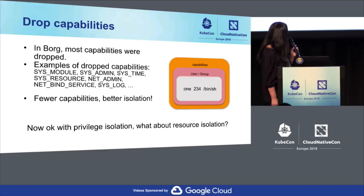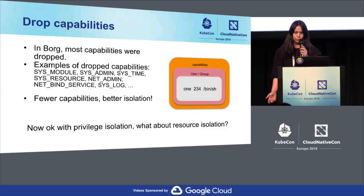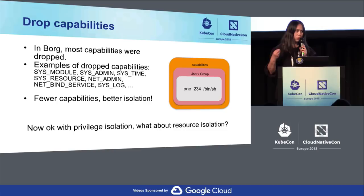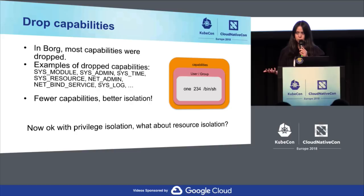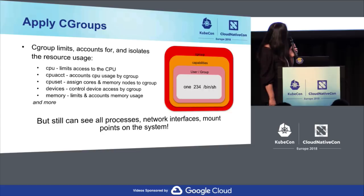With that change in Borg, we were okay with privilege isolation. But what about resource isolation? Think about an abusive user trying to use up all available memory. The kernel gets too busy with page reclaim trying to free pages, everything on the node slows down, and eventually some workloads get killed by the kernel. The solution: we apply cgroups.